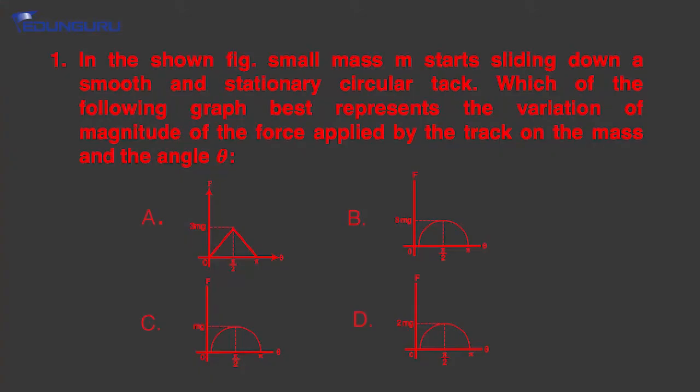In the shown figure, small mass m starts sliding down a smooth and stationary circular track. Which of the following graphs best represents the variation of magnitude of the force applied by the track on the mass and the angle theta?